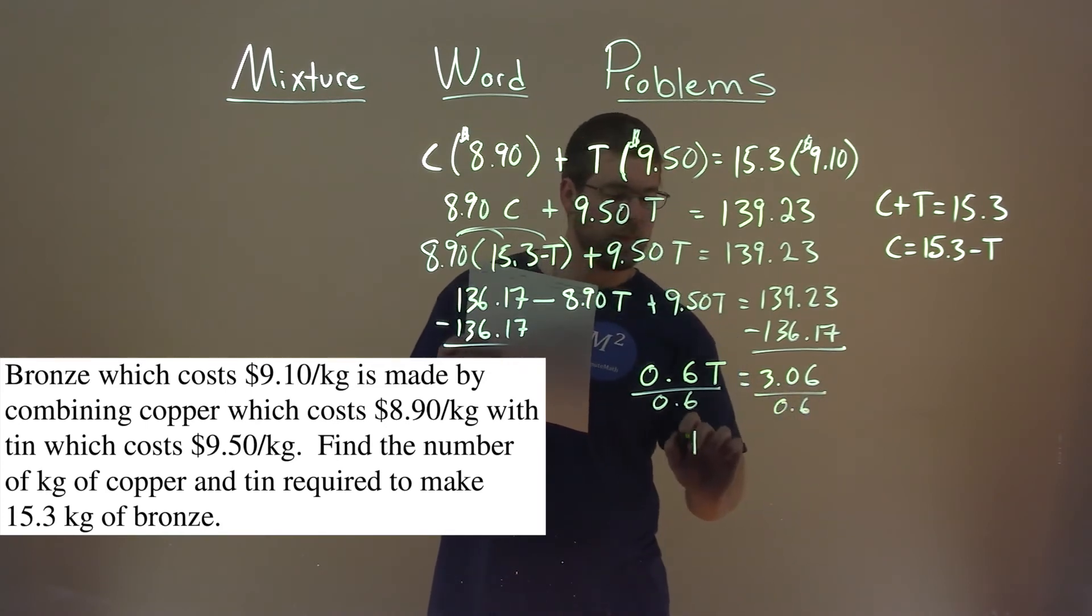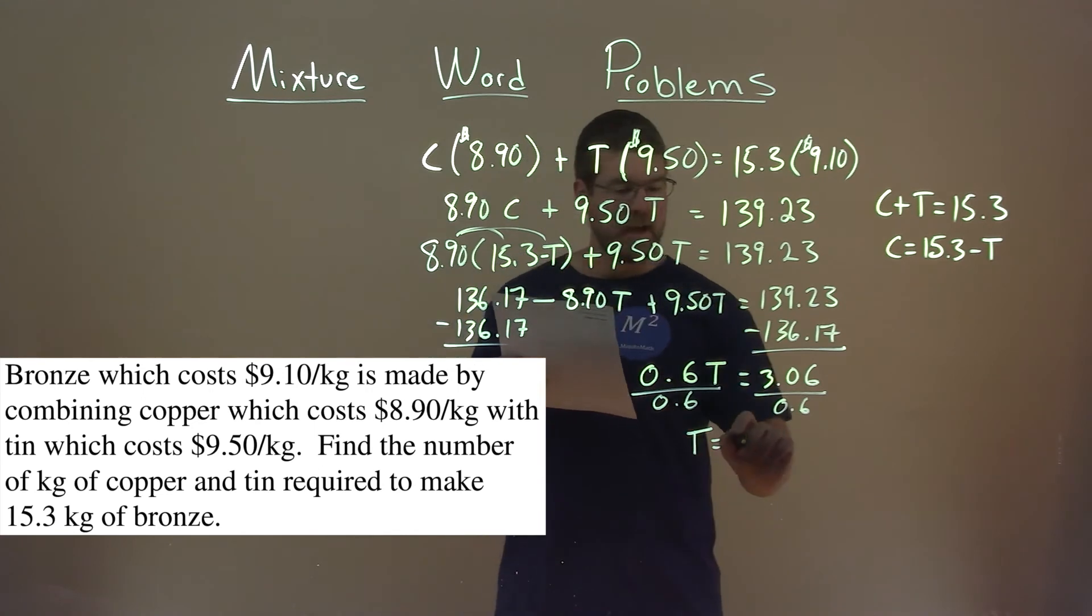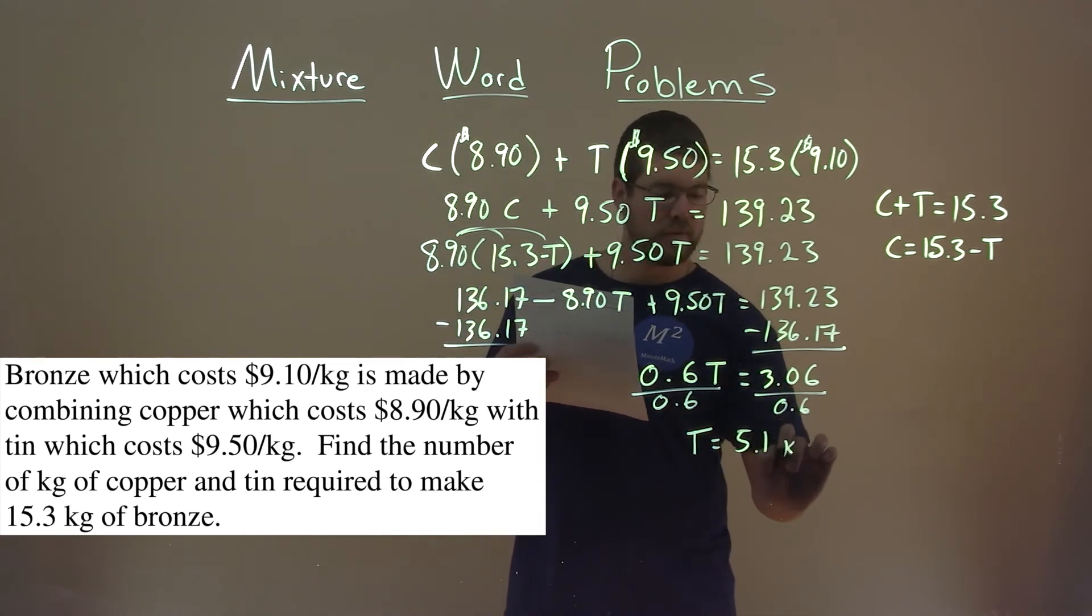Divide both sides by 0.6, and T equals 3.06 divided by 0.6, and that's 5.1 kilograms, and this is the kilograms of tin.